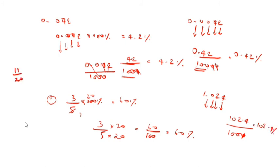Now 11 by 20 — fraction into percentage form. How will we convert 11 by 20? Into 100 percentage, write directly. 10 and 10 cancel, 1 times 5 times, so 55 percentage.